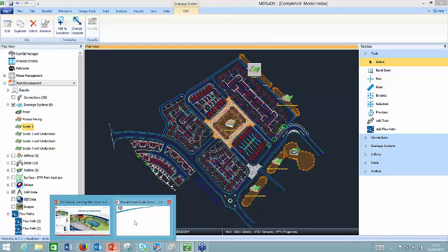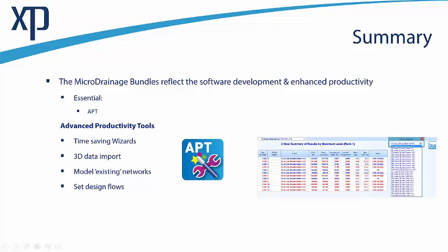Returning to the presentation — in summary, I hope that's provided a clearer illustration of how these microdrainage bundles reflect not just the development process but how they help you work more quickly, accurately, and productively. The essentials bundle over and above fundamentals provides the APT module — advanced productivity tools, which will save you typically a better day's work at the end of the design process. It identifies the critical storm duration at each network location, which you can print out and submit to authorities. It also enables importing of three-dimensional data, modelling existing drainage networks, and setting design flows to optimize downstream pipes while designing.